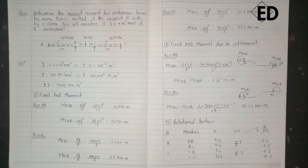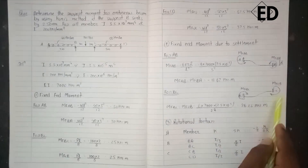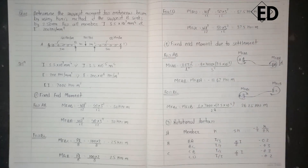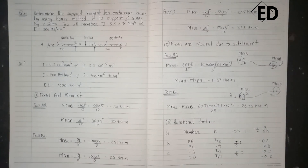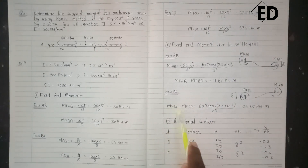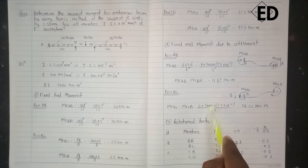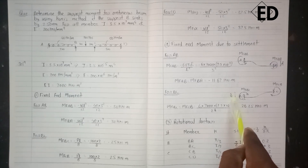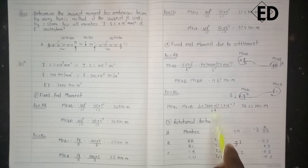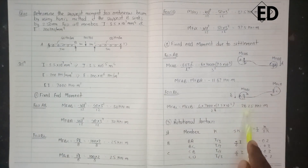Now for span BC, since support B sinks, there is a δ at B relative to C. The fixed end moment from B to C equals 6EI·δ/L², where for the BC span the length is 2 m. We get the fixed end moment from B to C equal to 26.25 kN·m.